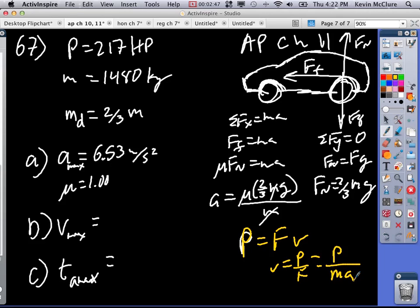So the power is 217 times 746 divided by 1480 times 6.53. So I get something like 16.7, or 16.8 meters per second.